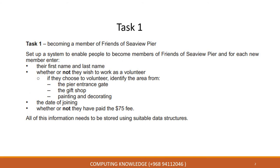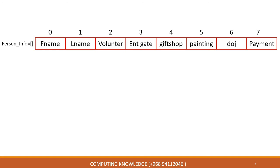I am going to start Task 1 - becoming a member of Friends of CVO Pyre. CVO Pyre set up a system to enable people to become members. For each new member, we enter their first name and last name, whether they will work as a volunteer, and if so, which area - entrance gate, gift shop, or painting and decorating. We also take the date of joining and whether payment has been made.